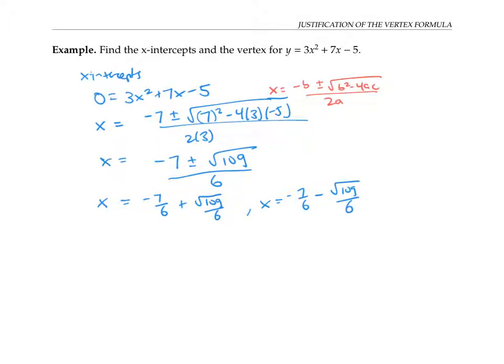Since the square root of 109 is just a little bit bigger than 10, this can be approximated by negative 7 over 6 plus 10 over 6, and negative 7 over 6 minus 10 over 6. So pretty close to, I guess, about one half over here and pretty close to about negative 3 over here. I'm just going to estimate so that I can draw a picture of the function.